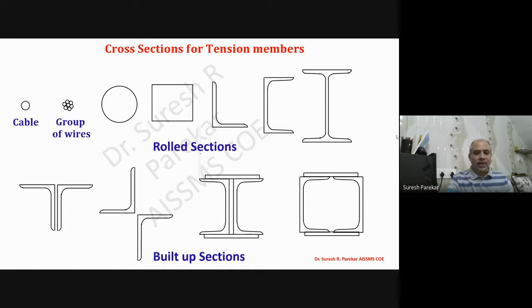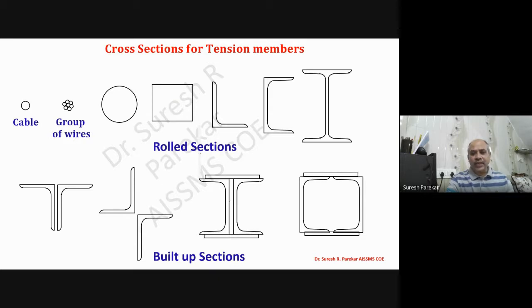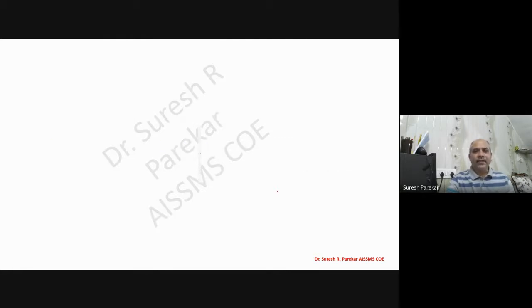For built-up sections used as tension members, we can have angles on opposite sides of a gusset plate, angles on the same side of a gusset plate, star angles, channels back-to-back with plate, and channels face-to-face with plate. Some of these are shown in the diagram.